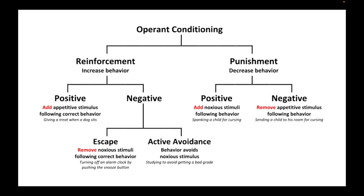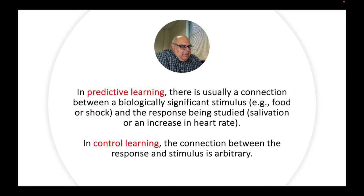Again, in predictive learning, which would be classical conditioning in our example, there's usually a connection between some biologically significant stimulus like food or feelings of shock, negative emotion, and the response being studied salivation or an increase in heart rate. There's an example in the reading about electrical shock and heart rate. If that seems familiar to you, you can review that in the textbook. So predictive learning, or classical conditioning, the major variables, the relationship, the connection between the stimulus and the response is rooted ultimately in some kind of biological relationship.